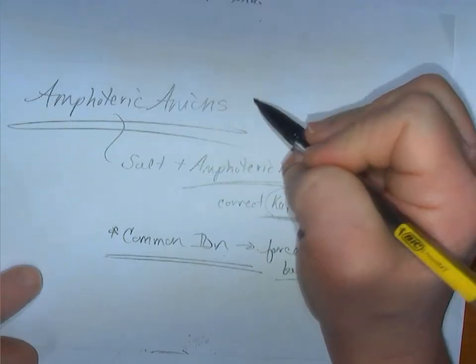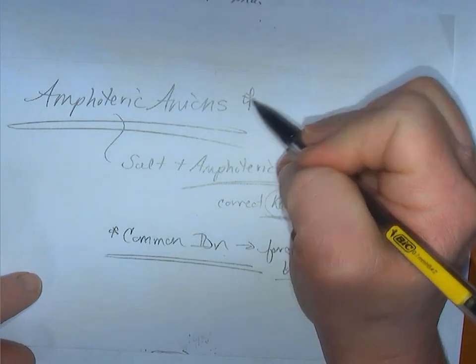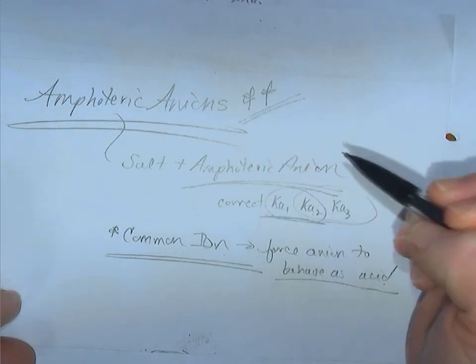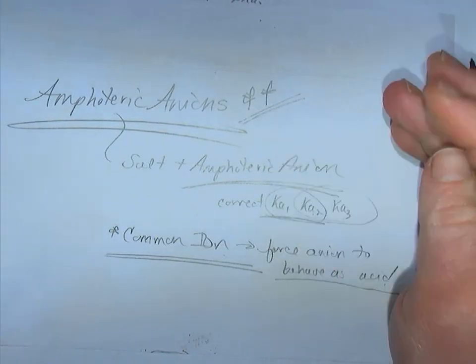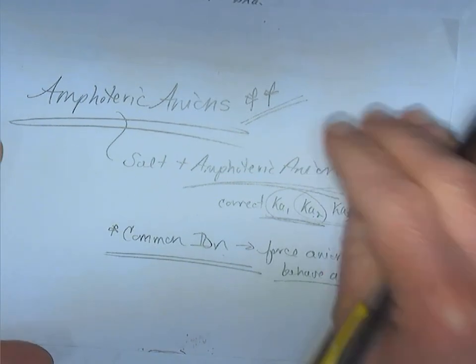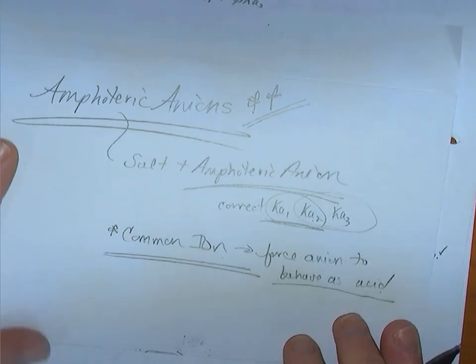These amphoteric anion problems will also show up in the next lesson, which covers the titration of polyprotic acids.